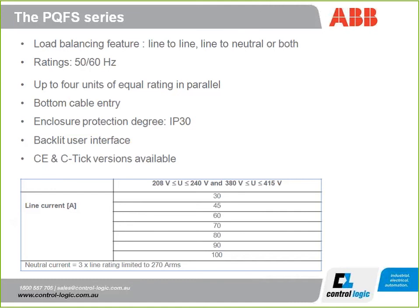The PQFS series has a load balancing feature and you can connect up to four units of equal rating in parallel. IP30 is the IP rating, with current ratings from 30 up to 120 amps — giving lots of flexibility. You don't have to over-size because ABB offer a comprehensive current range. The PQFM series is more for three-wire applications and cannot correct harmonics in the neutral, so it's more suited to industrial applications like water treatment. It can filter up to 20 harmonics up to the 50th order and can also provide reactive power compensation.